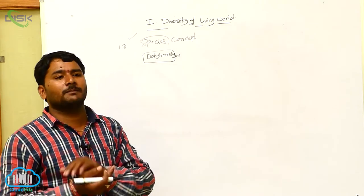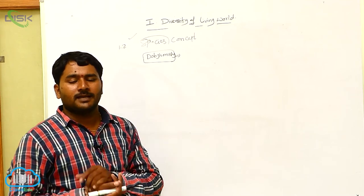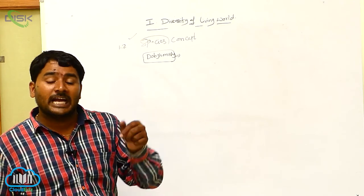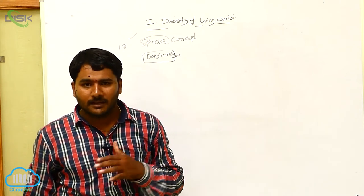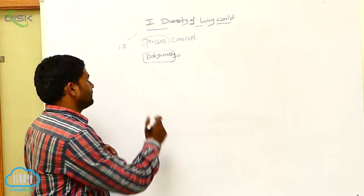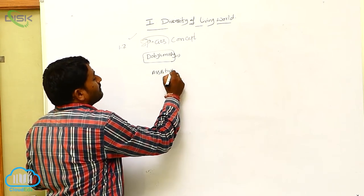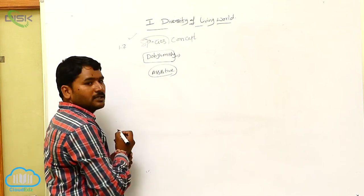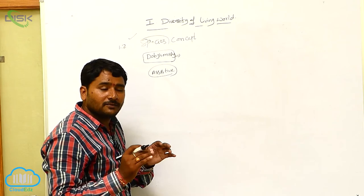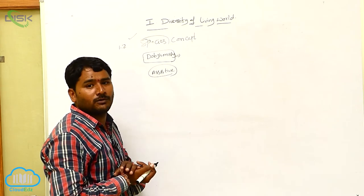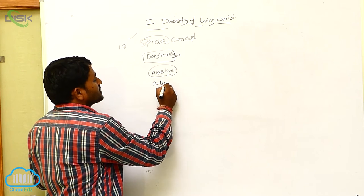What is Mendelian population? Mendelian population is a group of individuals that share a common gene pool and perform preferential or assortative mating. So as per Dobzhansky, Mendelian population is known as species.